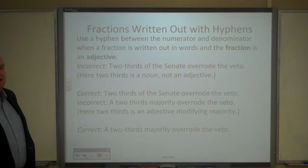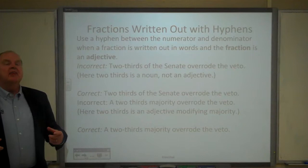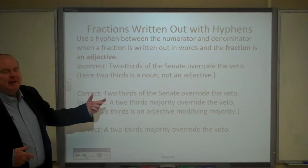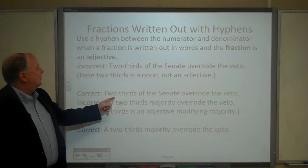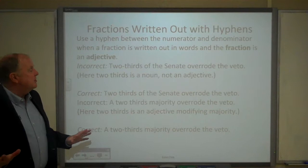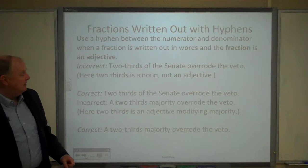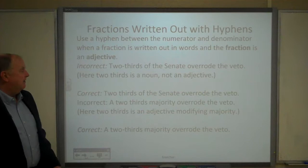Similarly, fractions are written out using a hyphen when the fraction is an adjective. If the fraction is a noun, the denominator is the noun and the numerator is an adjective modifying the noun. So in 'two thirds of the senate overrode the veto,' thirds is the subject, two modifies thirds, so there's no hyphen. However, if we said 'a two-thirds majority overrode the veto,' majority is the subject and two-thirds is an adjective modifying majority, so there the two-thirds would have the hyphen.